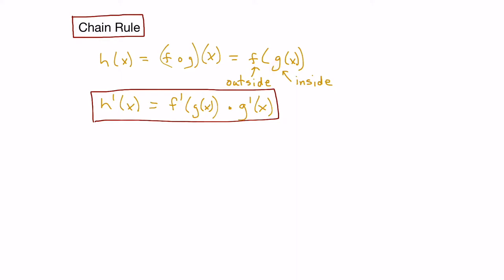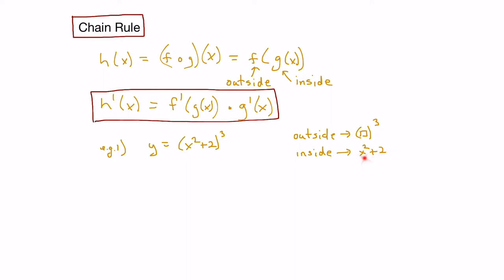Let's look at an example. We want to find the derivative of y equals x squared plus 2, all cubed. Y is a composite function. The outside function is the brackets cubed, and the inside function is x squared plus 2.